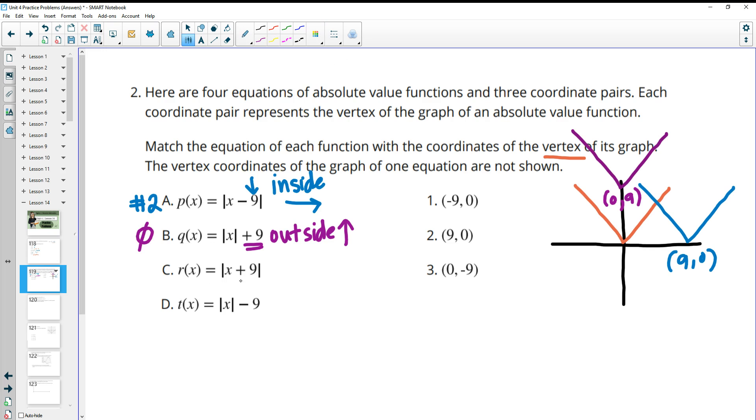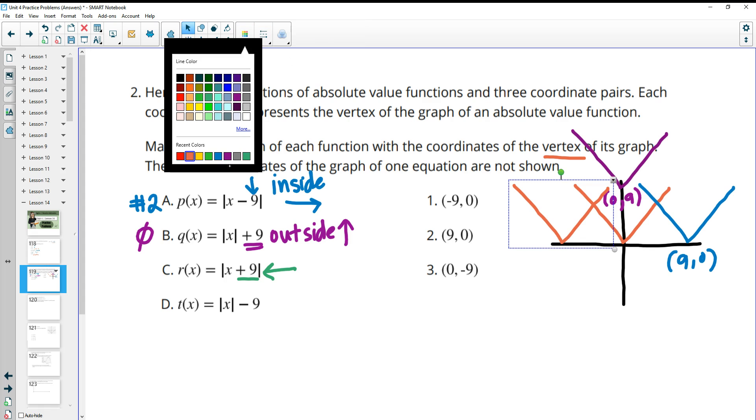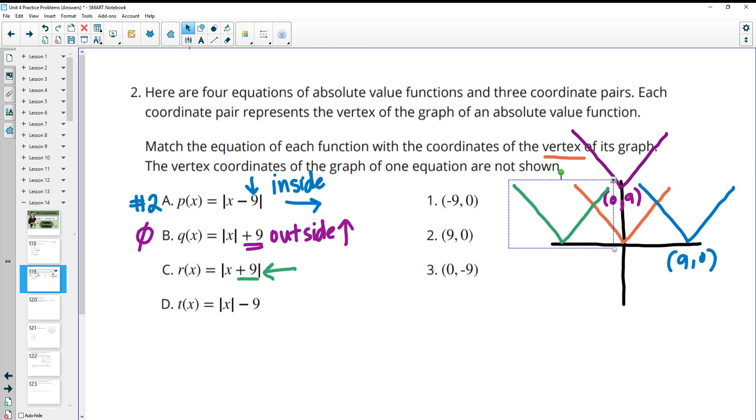Then C has that 9 on the inside. And so this one looks like it's a plus 9, but it's on the inside, so it's going to move it to the left 9 units. So this is going to grab the original parent function and move it to the left 9 units. So that's going to give us a vertex of negative 9, 0. And that one we can see is number 1.